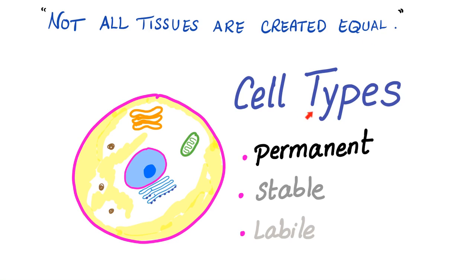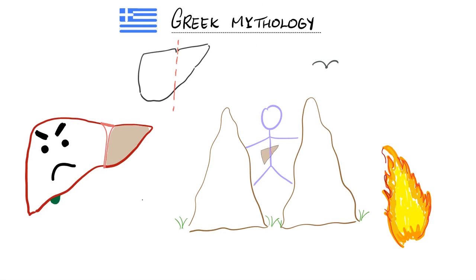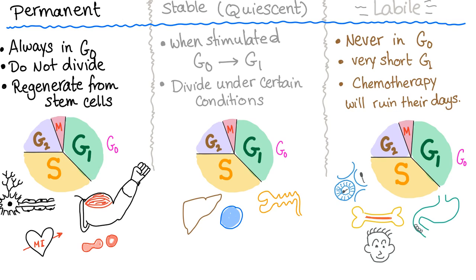Not all tissues are created equal. You have three types of cells: permanent cells (they never divide), stable cells (they can divide under special circumstances), and labile cells (always dividing like crazy). Consider the story from Greek mythology — a man who stole fire from Zeus was hung between two mountains and an angry bird came every day to eat half his liver. Since the liver is a stable cell that can divide under certain circumstances, it regenerated each night. It is really fascinating that back then, they knew the liver could regenerate.